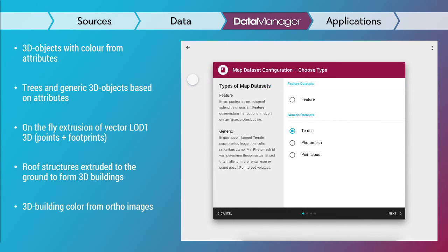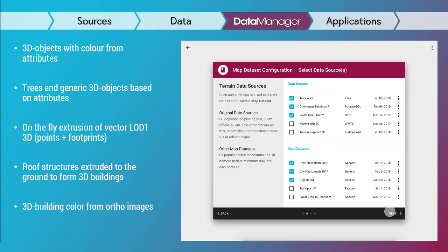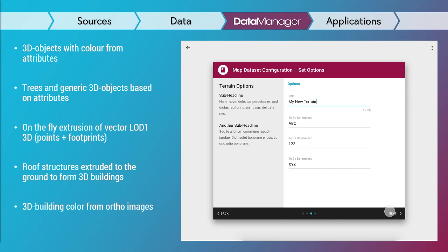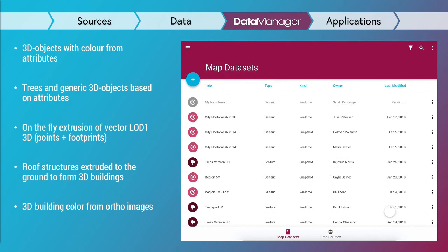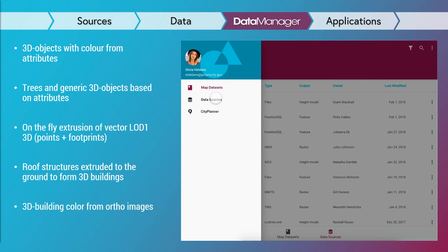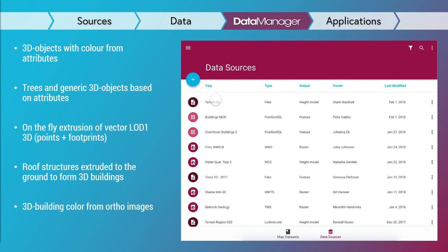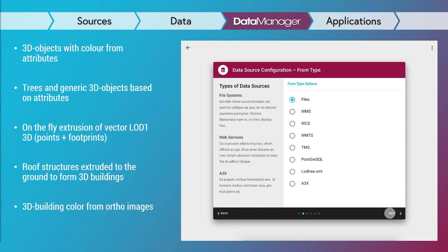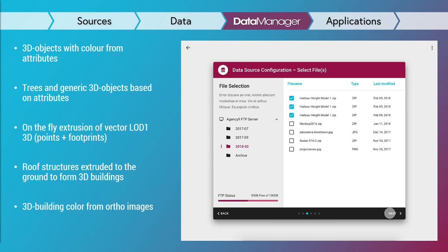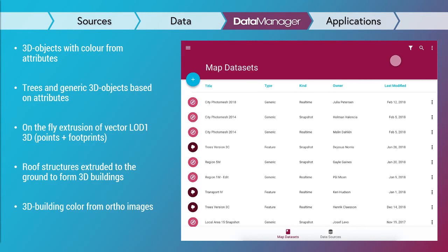We are also looking to be able to do things like matching or setting a color on a 3D object from attributes stored in a database or stored in the object itself. We can also generate 3D objects and trees from vector data based on attributes — so you could have a tree database somewhere, connect Data Manager to it, and automatically generate trees and 3D objects for lampposts and street furniture automatically based on attributes.